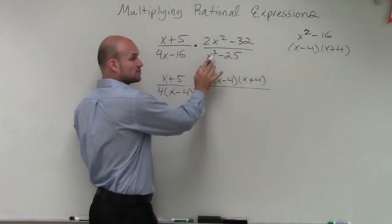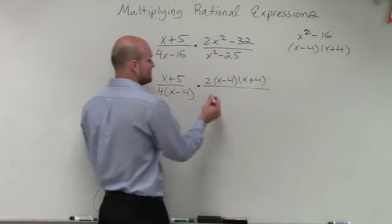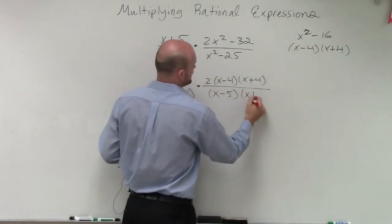Divided by, I have another difference of two squares. x squared minus 25 is going to be x minus 5 times x plus 5.